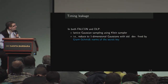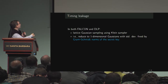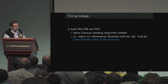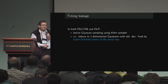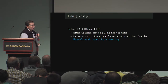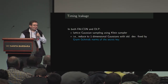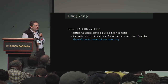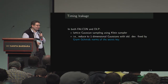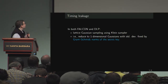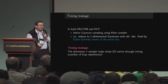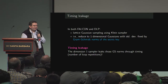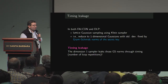It turns out that in both schemes, Falcon and DLP, the lattice Gaussian sampling is carried out with something called the Klein sampler. This means you reduce lattice Gaussian sampling to one-dimensional samplings, and the standard deviation of those one-dimensional samplings is determined by the Gram-Schmidt norms of the secret key. There's a timing leakage: the dimension-one sampler leaks those GS norms through timing information.